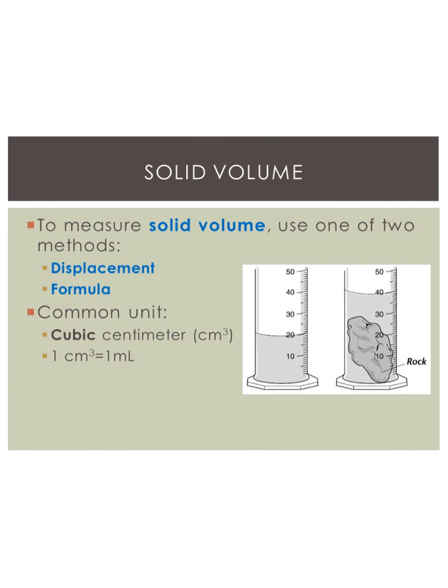Finally, for solid volume, there are two different methods. One is called displacement. That means you'll start with a certain amount in a graduated cylinder. So for this one, we have 20 milliliters. And then if there's space, you can drop it into the cylinder, and then see how much the water moves up. So we see that the water moves up to the 40.